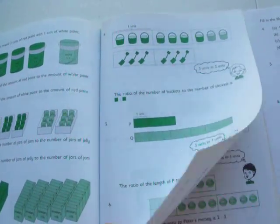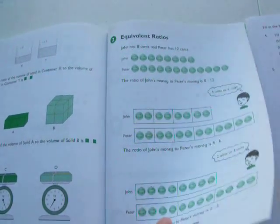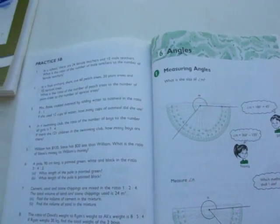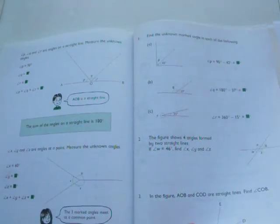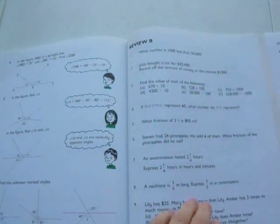This is finding the area of triangles and stuff. Ratios. Equivalent ratios. Practice. There's a practice. Measuring angles. Finding unknown angles. Another review. Another review. And that is the textbook.